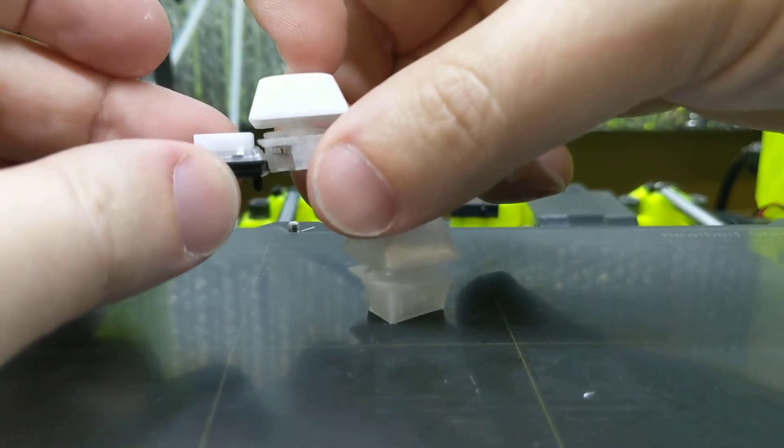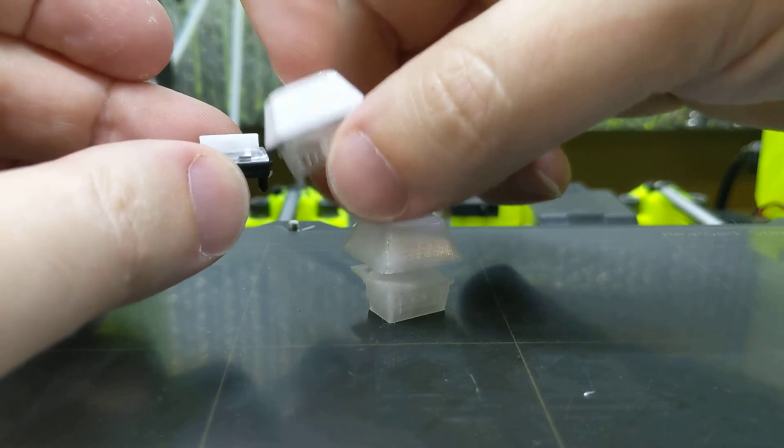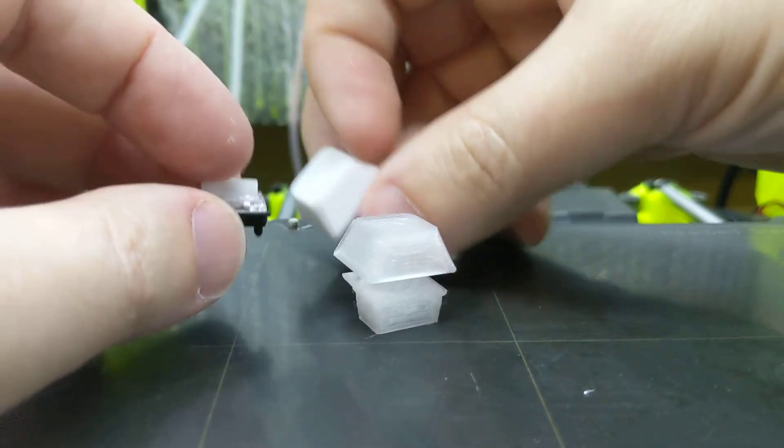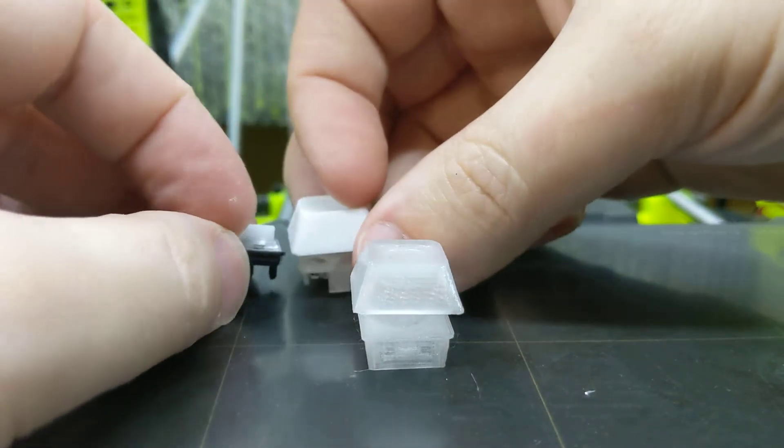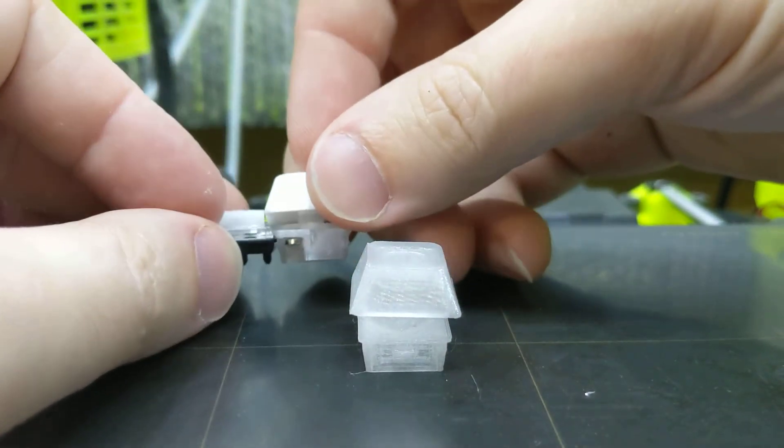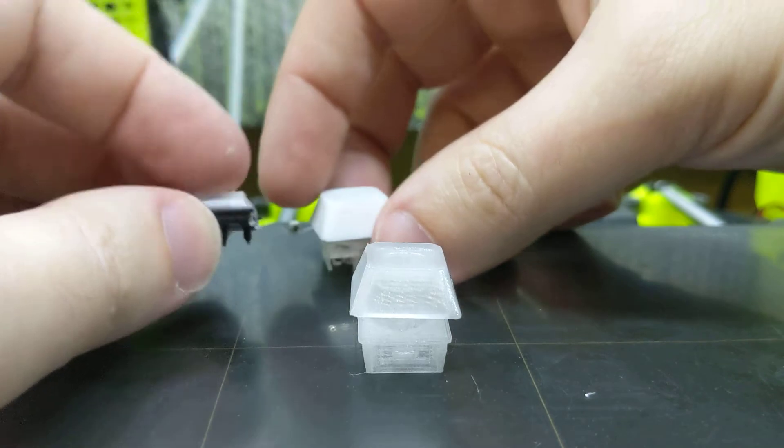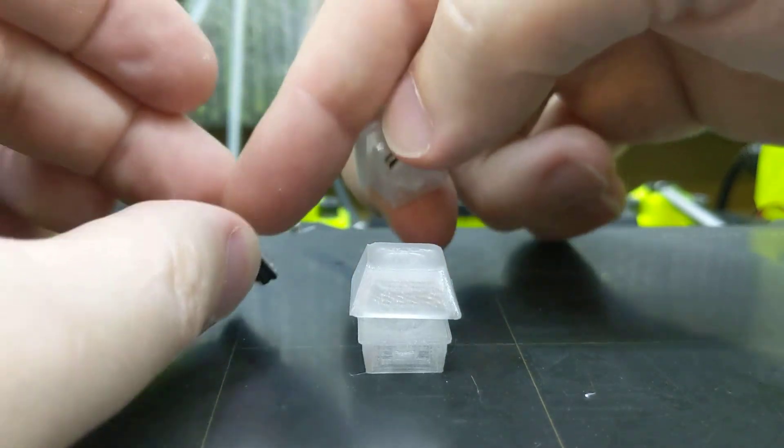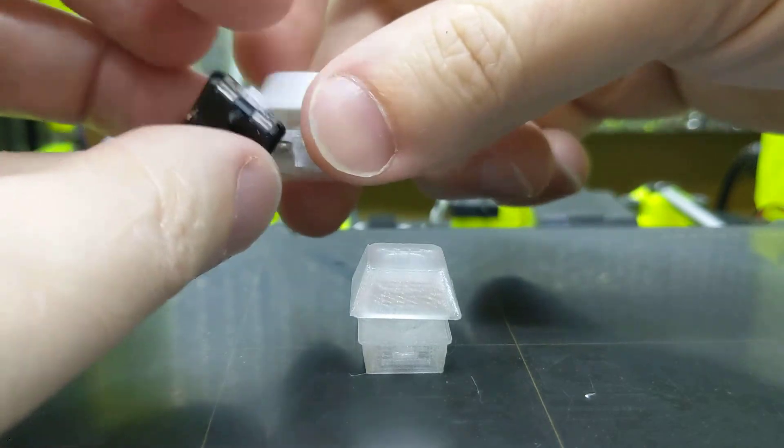And my switch will have more of it residing below the plate, basically. It's hard to describe, but they're about roughly the same. But the choc does squeeze in about half a millimeter, 0.6 millimeters more of travel in that same amount of size.